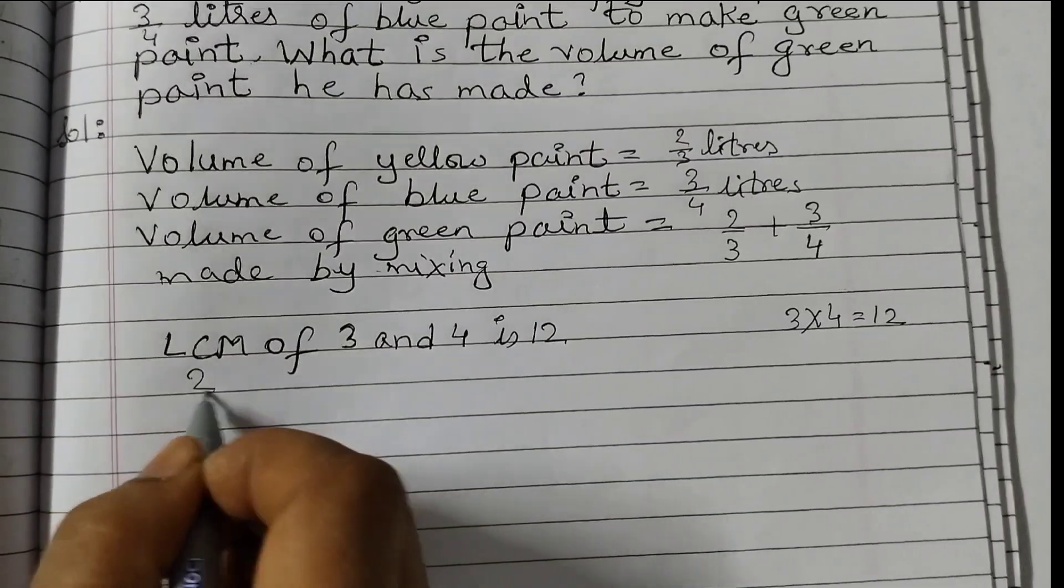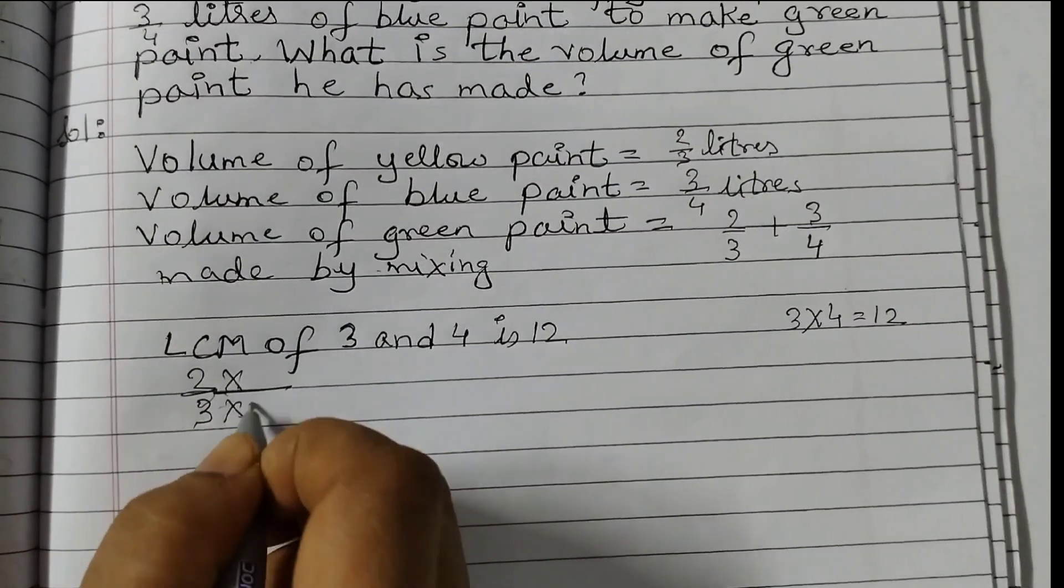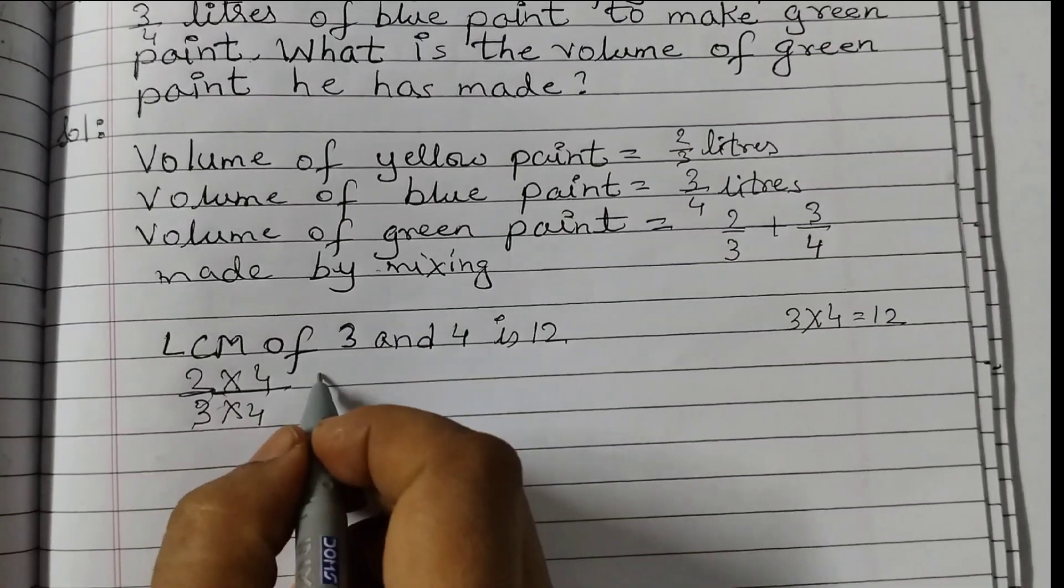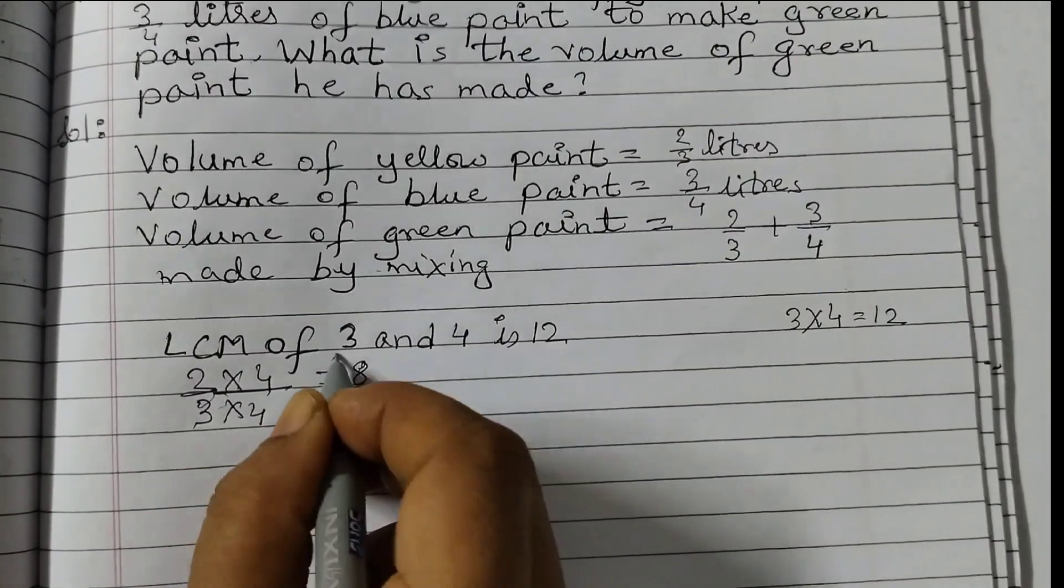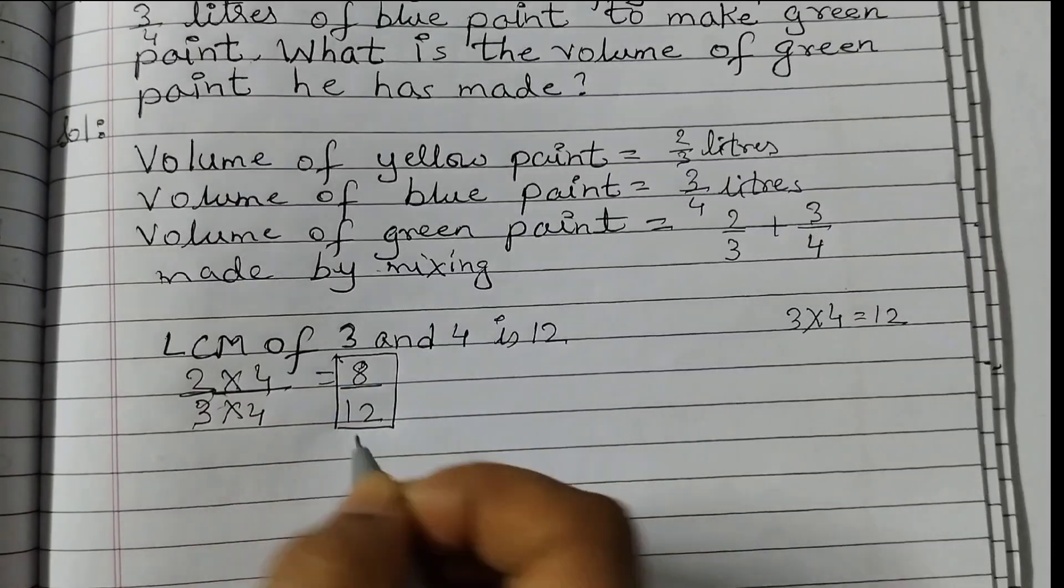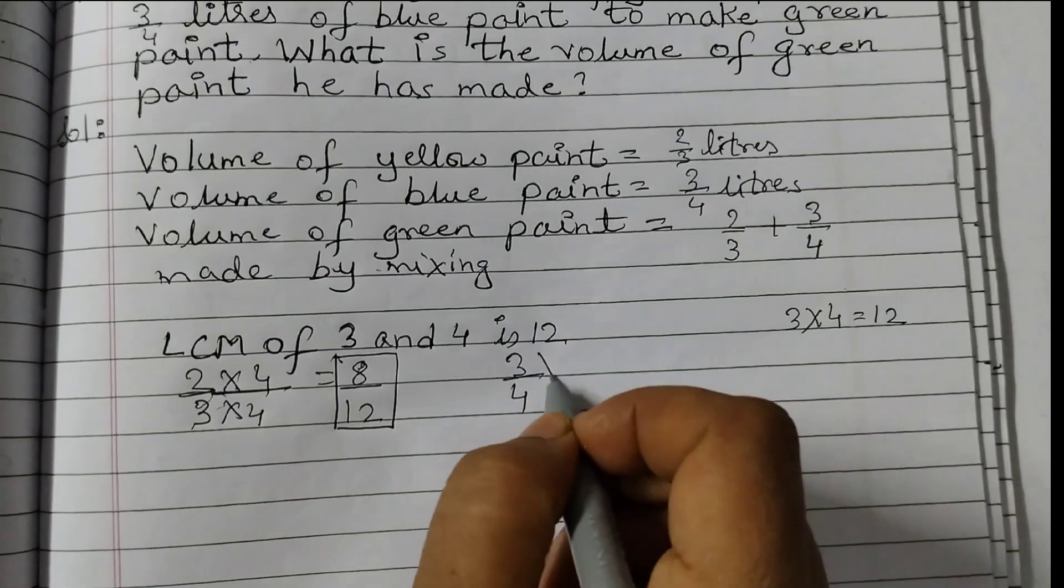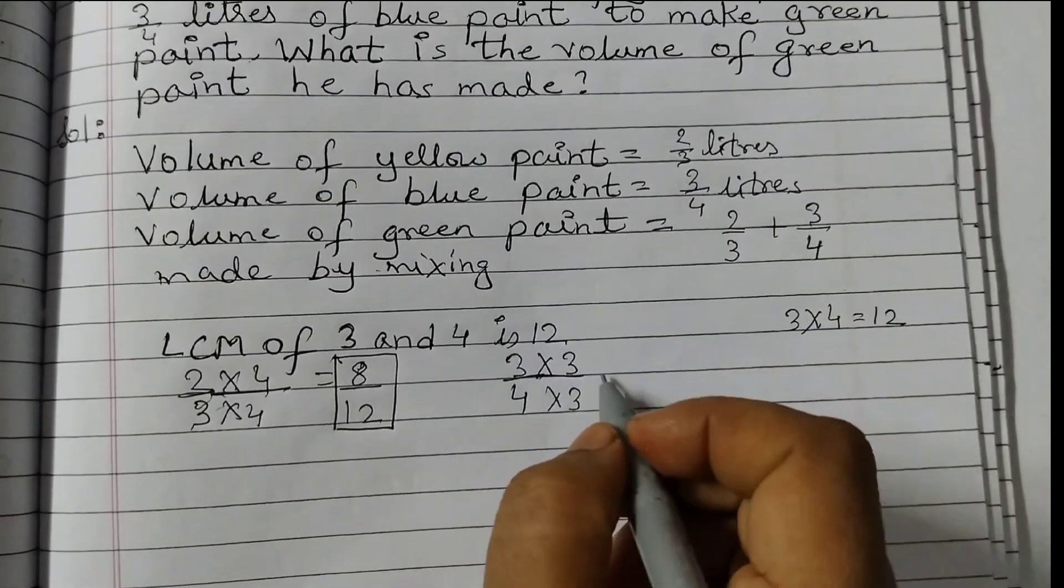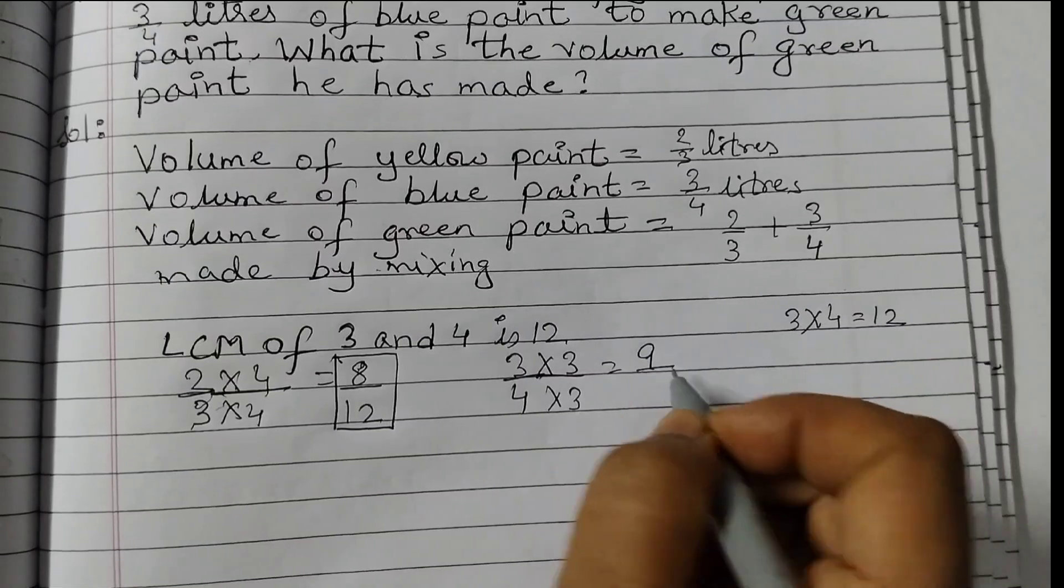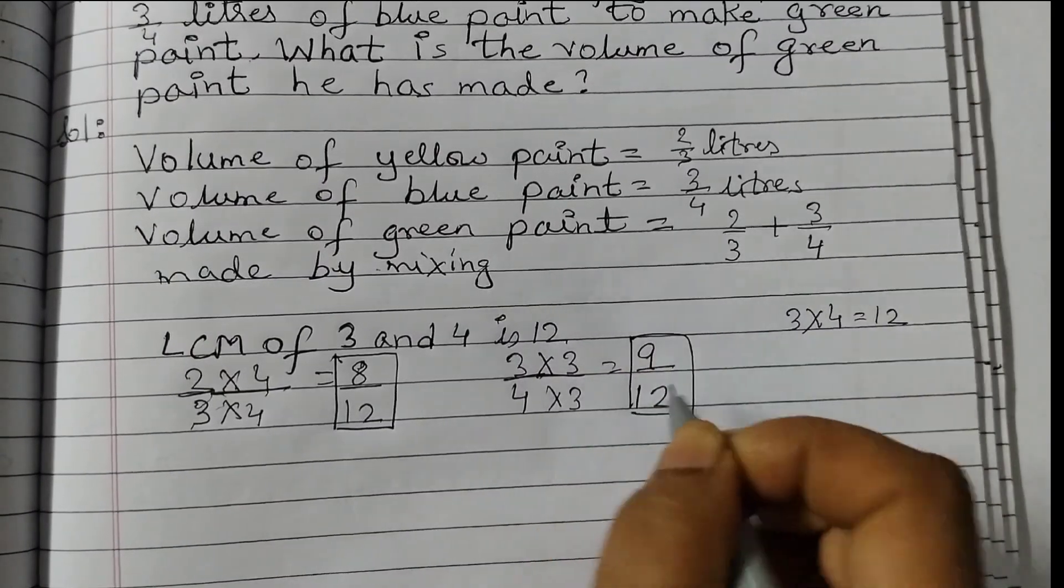We'll take 2/3 and multiply both numerator and denominator by 4, so 2×4 = 8 and 3×4 = 12, giving us 8/12. Next, 3/4 multiplied by 3/3 gives 9/12. Now we have a common denominator of 12.